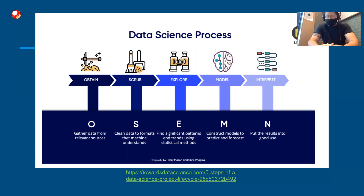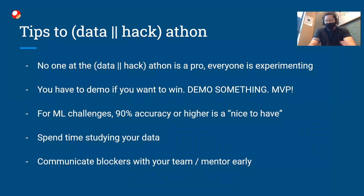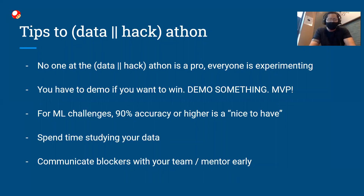Some tips: first, nobody here is a pro. Don't feel intimidated talking to a mentor because even mentors have a lot to learn — by helping you overcome your problem, they'll grow and you'll learn. Don't be afraid to ask questions. If you want to win, place, or even be considered, you have to stay and demo. When working with your team, define a clear MVP — a minimum viable product — something you can demo at the end. Even if it's one feature, one graph, or one business point, if you have something to show, you have a chance at a prize.